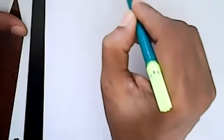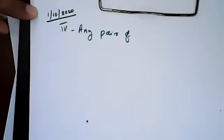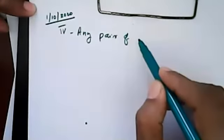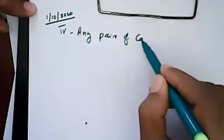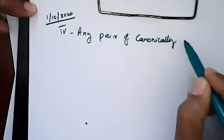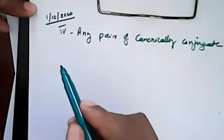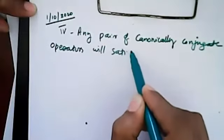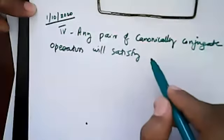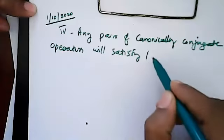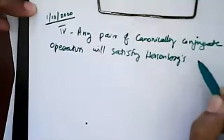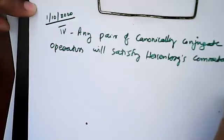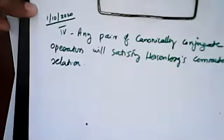Now the fourth postulate says: any pair of canonically conjugate operators will satisfy Heisenberg's commutation relation. Let me explain each term. 'Conjugate' means non-commuting or anti-commuting. 'Canonically' refers to canon laws — in a biblical sense, canon laws are directly given and should not be questioned. If you question canon laws, the system will collapse.